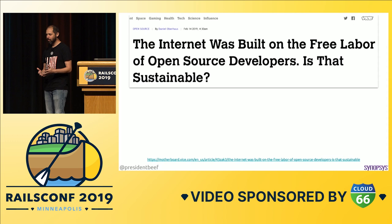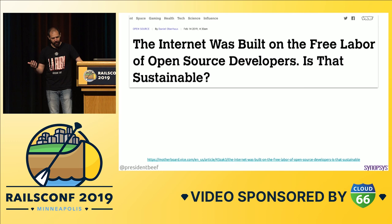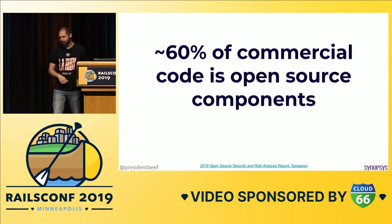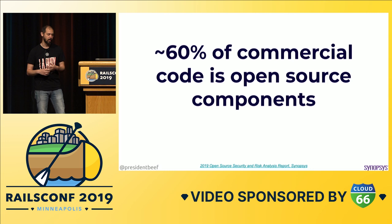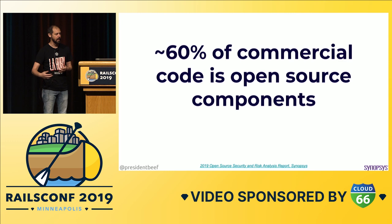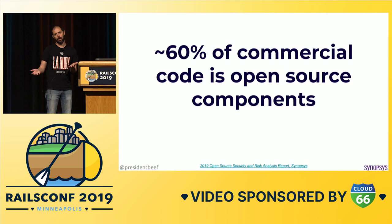There are some articles that have been coming out recently. One from February says, 'The Internet was built on the free labor of open source developers. Is that sustainable?' And the way they phrase that, you have to say probably not. DHH had a thought on this. According to a report put out by Synopsys, where I work, 60% of commercial code is open source components — based on our dependency analysis tool and our customers. The report says this might actually be a low estimate; some estimates are as high as 90%. So 60 to 90% of the code that companies are using to run their businesses and generate revenue is coming from open source. The likelihood that they're paying for that or even contributing back? Low, let's say.